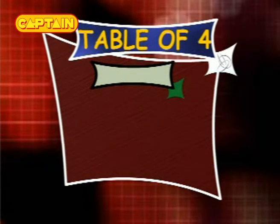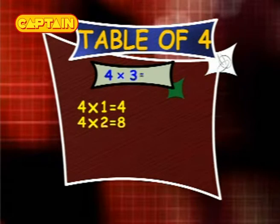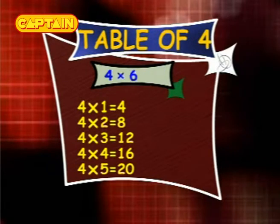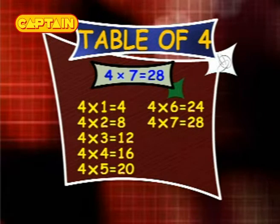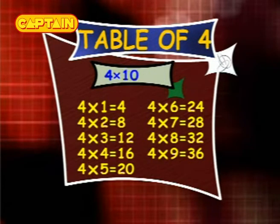Table of 4. 4×1 is 4. 4×2 is 8. 4×3 is 12. 4×4 is 16. 4×5 is 20. 4×6 is 24. 4×7 is 28. 4×8 is 32. 4×9 is 36. 4×10 is 40.